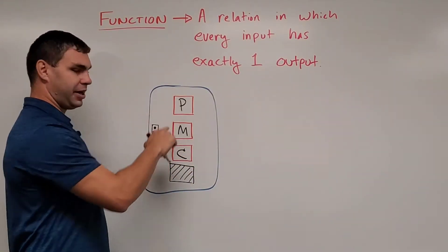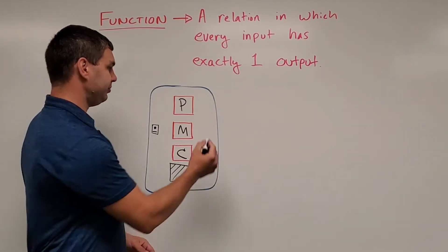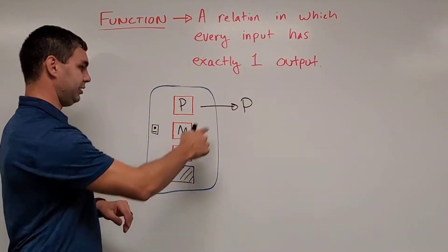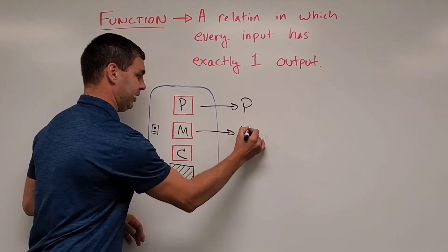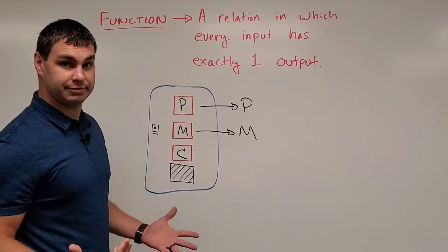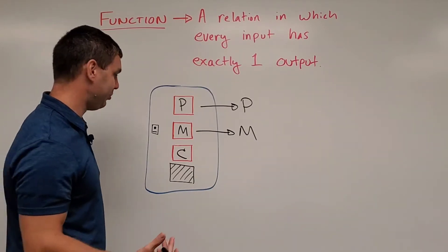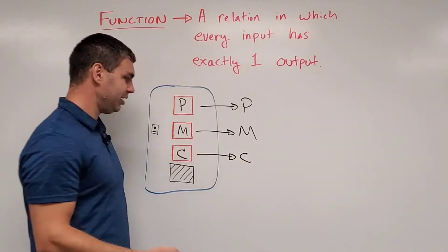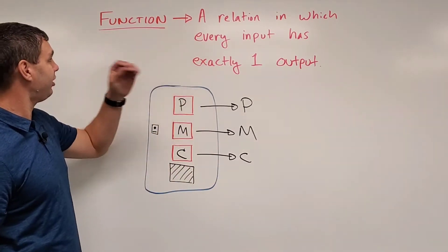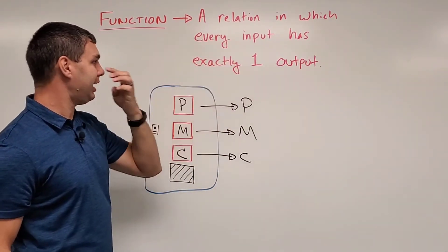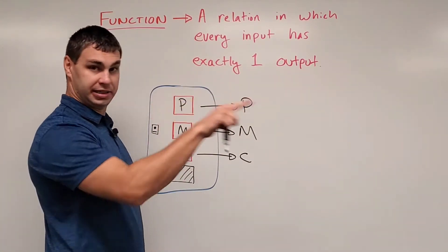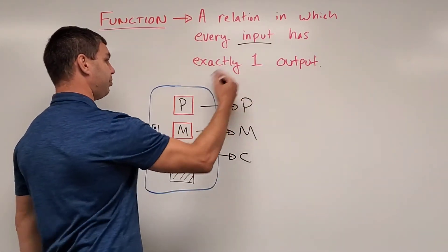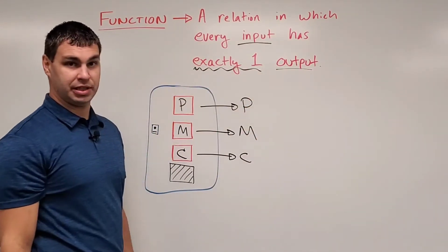When you press the Pepsi button on a vending machine, you expect to get a Pepsi — that input gives you a Pepsi output. When you hit the Mountain Dew button, you expect to get a Mountain Dew, and when you hit Wild Cherry, you expect to get a Wild Cherry Pepsi. This is a function because, if you remember our definition, it is a relation in which every input has exactly one output. You're inputting the button — that's your X value — and you have to only have one output.